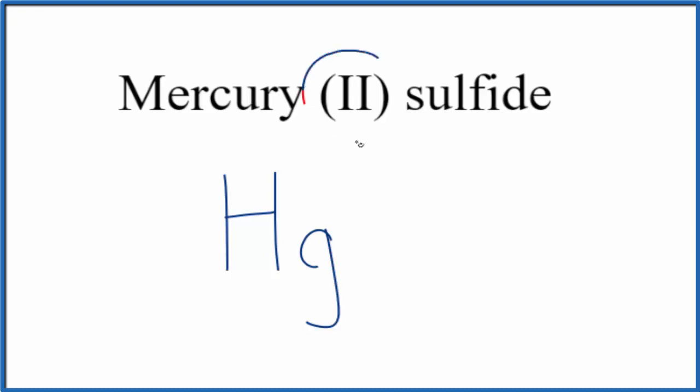Mercury is a transition metal, we can tell we have this Roman numeral II. That means the Hg will be 2+.